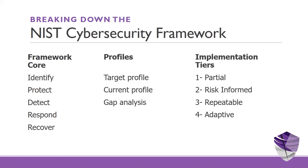Tier Two is called Risk-Informed, which means you understand what's going on and you're paying attention, but you have no formal policies in place to deal with it when it does happen. Tier Three is called Repeatable, meaning you have policies and procedures in place, but not enough tools to deal with incidents in real time.